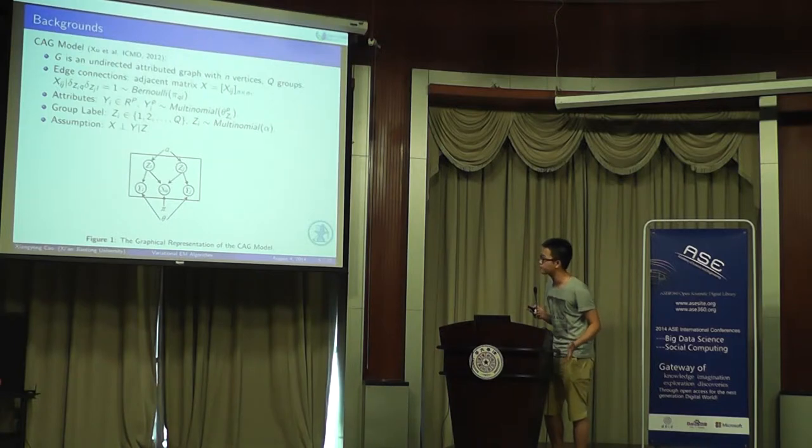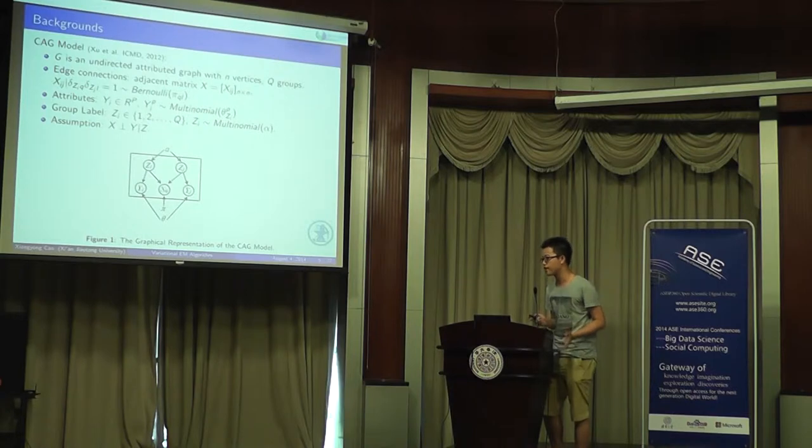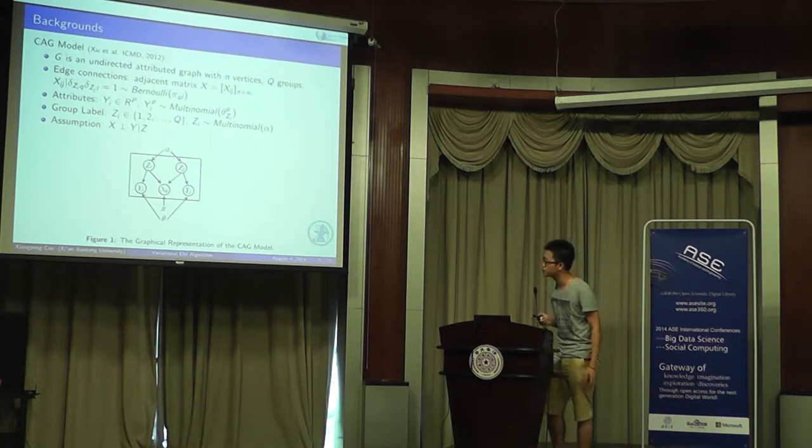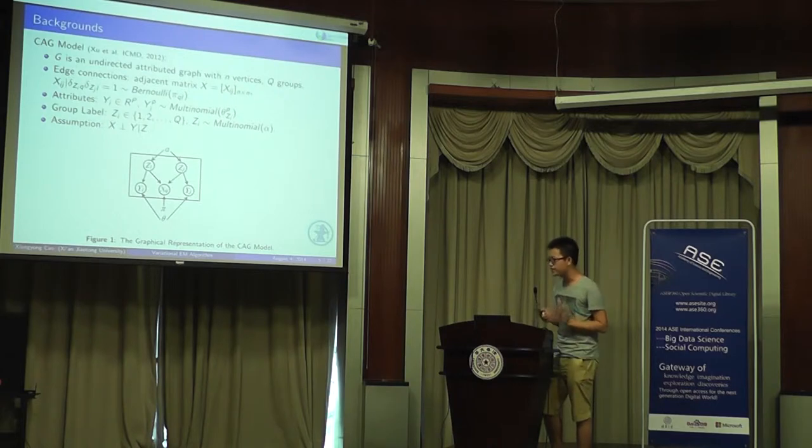We assume that X_ij, conditioned on the labels of i and j, obeys the Bernoulli distribution. To describe the attributes of the vertex, we use a p-dimensional vector y_i. And assume that the elements of y_i obey the multinomial distribution. To describe the group label, we use the variable z_i. And assume that z_i obeys the multinomial distribution. Given z_i, X is independent of Y.